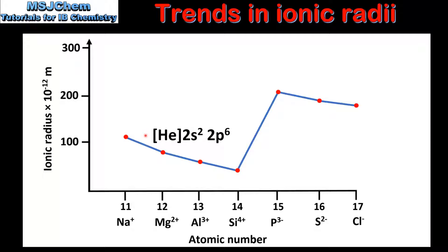The first 4 positive ions all have the same electron configuration, which means they are isoelectronic. The negative ions also have the same electron configuration. However, when compared to the positive ions they have an additional occupied energy level — the positive ions have 2 occupied energy levels while the negative ions have 3. This explains the large increase in ionic radius between the positive ions and the negative ions in period 3.